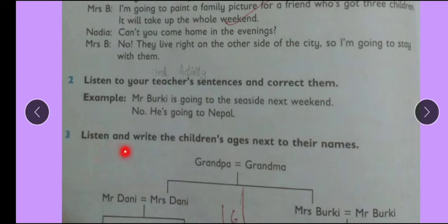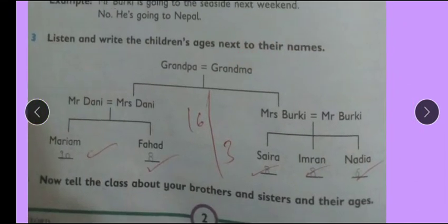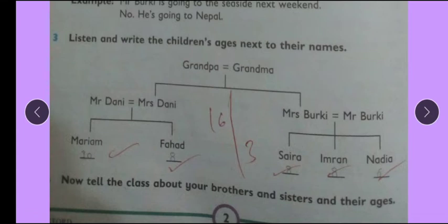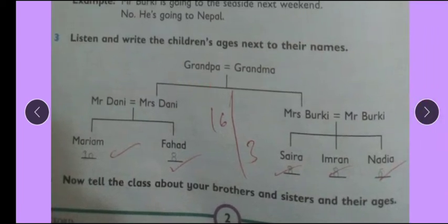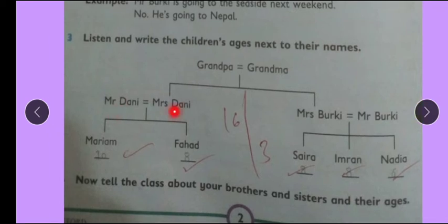Question number 3: Listen and write the children's ages next to their names. We have a family tree. We will look at the approximate ages of the children. Grandpa and Grandma are at the top. Their children are Mr. Berkey and Mrs. Berkey, and Mr. Dany and Mrs. Dany.